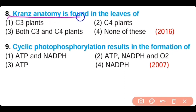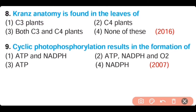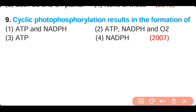Question number 8. Kranz anatomy is found in the leaves of: C3 plants, C4 plants, both C3 and C4, or none of these. The correct answer is option 2. Kranz anatomy is found in the leaves of C4 plants.